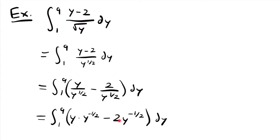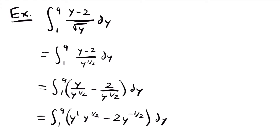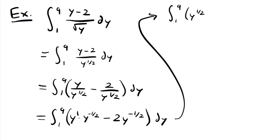All we did was move the denominators to the top by making their exponents negative, then multiply by the numerators. Simplifying the first term — when you multiply two terms with the same base you add the exponents, so y to the first power times y to the negative one half power gives y to the power of 1 plus negative one half, which is positive one half. So we can rewrite this integral as the integral from 1 to 9 of y to the one half power minus 2 times y to the negative one half power, dy.